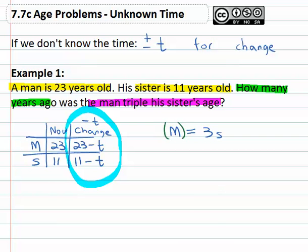What was the man at this point in the past? Well, the man in the past was twenty-three minus t equals three times the sister, who in the past was eleven minus t.